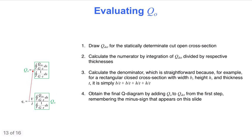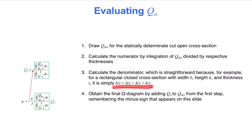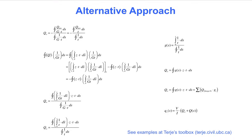Substituting the shear flow into the compatibility equation and solving for the shear flow at the cut, Q0, we find that the fraction of integrals is actually the first moment of area at the location of the cut, capital Q0, marked in green. The final capital Q diagram for the cross-section is obtained as follows: first, draw the Q-determinant diagram for the statically determinate cut open cross-section; second, obtain the numerator by integration of the statically determinate Q diagram divided by respective thicknesses; third, obtain the denominator — for example, for a rectangular closed cross-section with width B, height H, and thickness T, it is simply B/T + B/T + H/T + H/T; fourth, obtain the final Q diagram by adding the constant Q0 to the statically determinate diagram, remembering the minus sign.